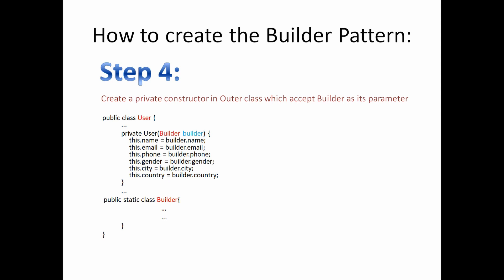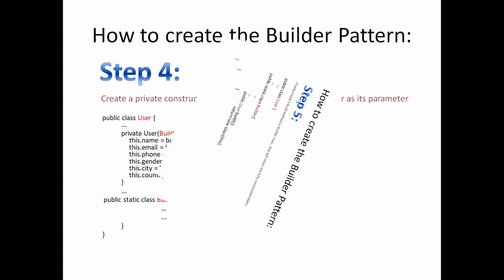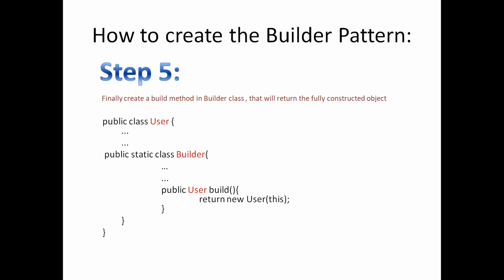We have declared this constructor as private so that no one outside the class can construct the User class — only the Builder class can set up the User class. Then in the final step we will create a method named build inside our Builder class, and this build method will return the fully constructed object of the User class. This delegates the process of constructing the object to the Builder class, which is what we discussed earlier — separating the construction of a complex object from its representation. Now let's dive into the editor and start writing some code.